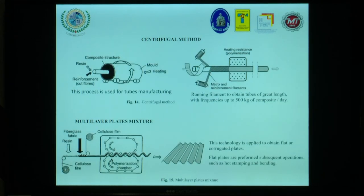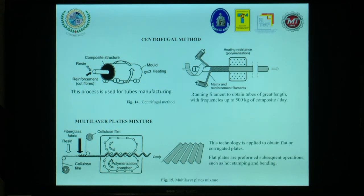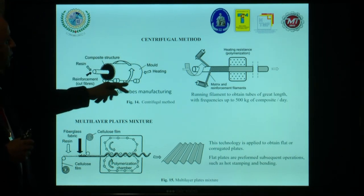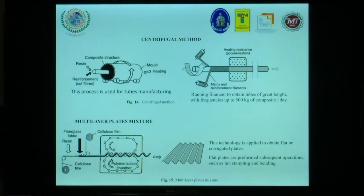Another method is the centrifugal method, used for tube manufacturing. Running filament to obtain tubes of great length, with frequency up to 500 kilos of composite per day. Nowadays, resin is used together with the reinforcement.